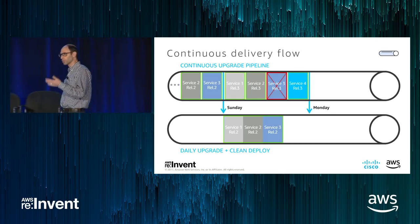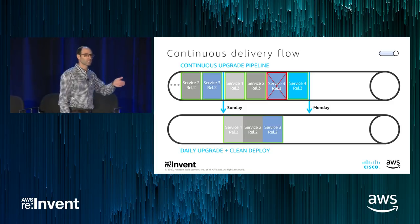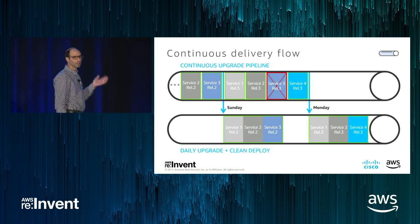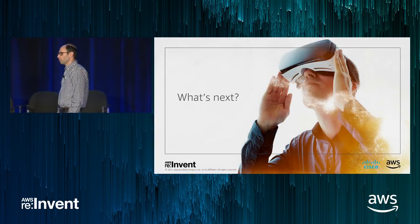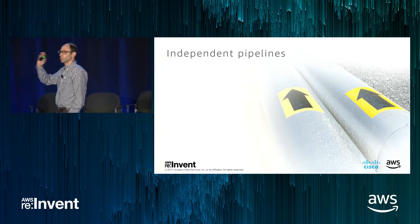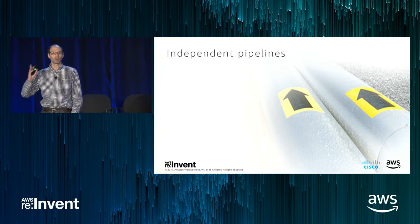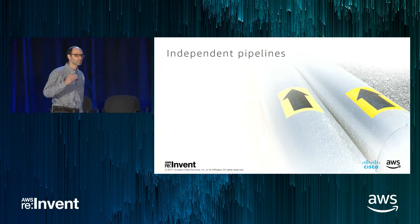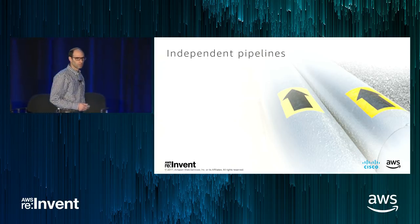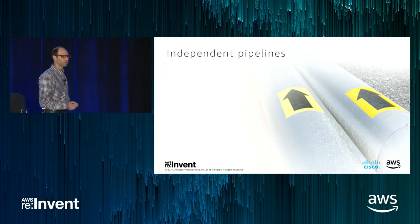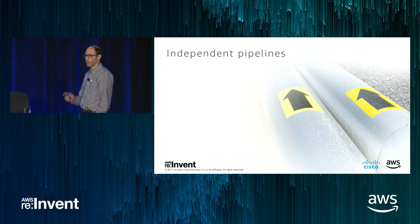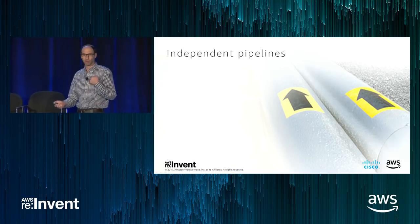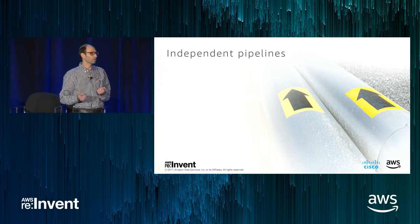We've learned so much over this past period — the world is developing rapidly and we're always thinking about where we can improve. For example, our pipeline is very serial. We want to achieve the point where individual development teams can deliver directly to the end customer without a dependency on a different team. We're constantly evolving, debating, and building technologies to enable this.